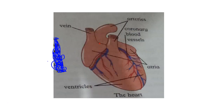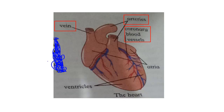Yahan par aapko yeh heart nazar aa raha hai. Ismein yeh blood vessels hain — inhe hum kehte hain veins. Inका kaam yeh hai ki yeh blood ko body se waapas heart ki taraf le ke aati hain. Yeh waali blood vessels hain jinhe hum arteries kehte hain — inка kaam hai blood ko heart se door le jaana, body ki taraf aur lungs ki taraf. Yahan par aapko coronary blood vessels nazar aa rahi hain — yeh heart ke muscles ko blood supply karti hain taake wo oxygen aur food hasil kar sakein.